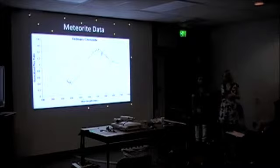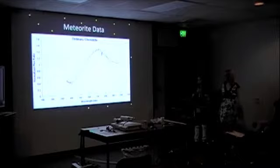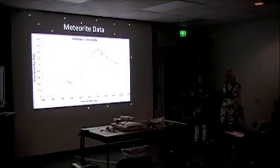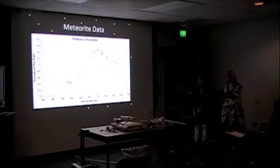Here is our meteorite data. Again, wavelength is on the x-axis and normalized flux ratio on the y-axis. We do have a slope going up, although it's not quite as gradual as Tantalus's slope. There is still a visible peak at the visible red wavelength, and it comes back down in the infrared — so even the meteorite shows a dip in the infrared.